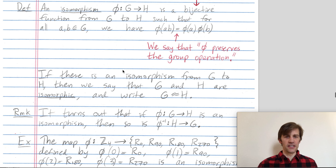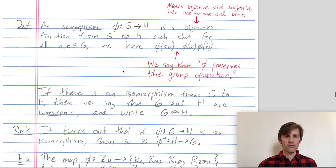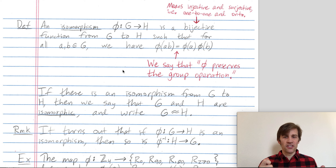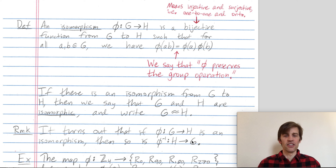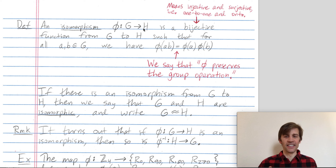Let's go through some more examples. First, let me say that it seems like this definition is asymmetric — G and H have the same structure, but my isomorphism goes from one to the other. It turns out it doesn't matter which is first. If there's an isomorphism from G to H, then the inverse map going from H back to G is also an isomorphism. So even though the definition appears asymmetric, if you can find an isomorphism from G to H, its inverse is also an isomorphism from H back to G.